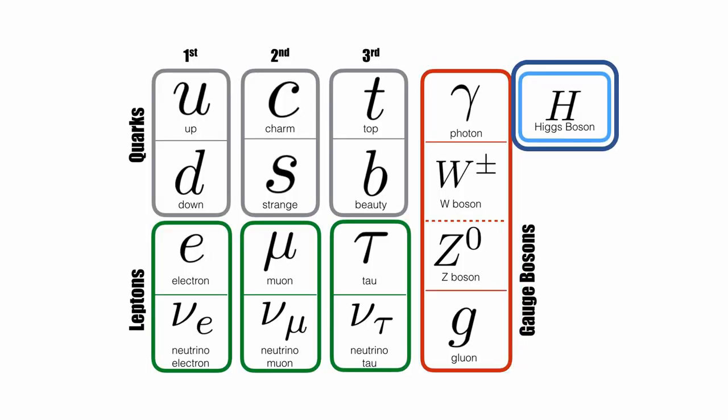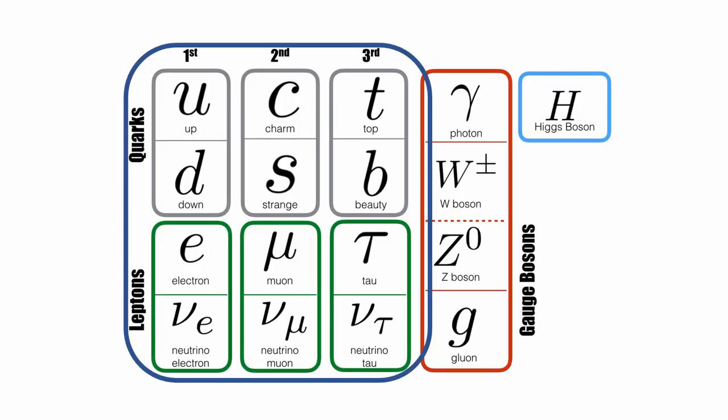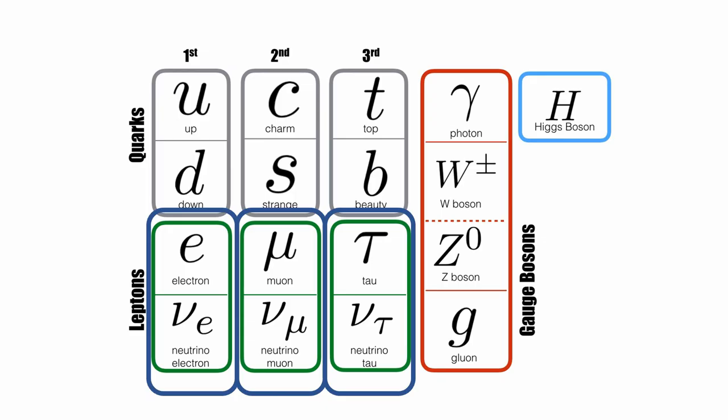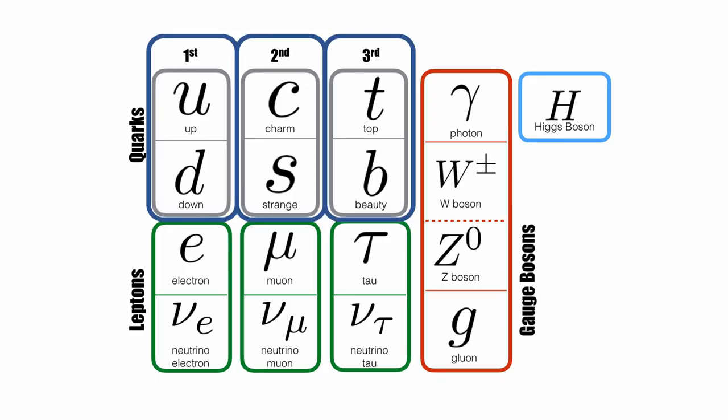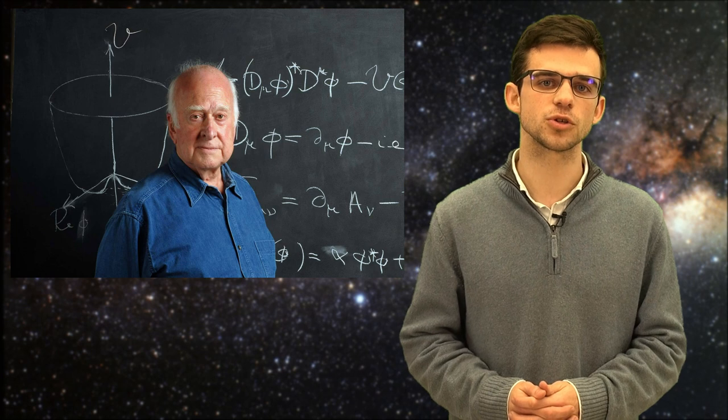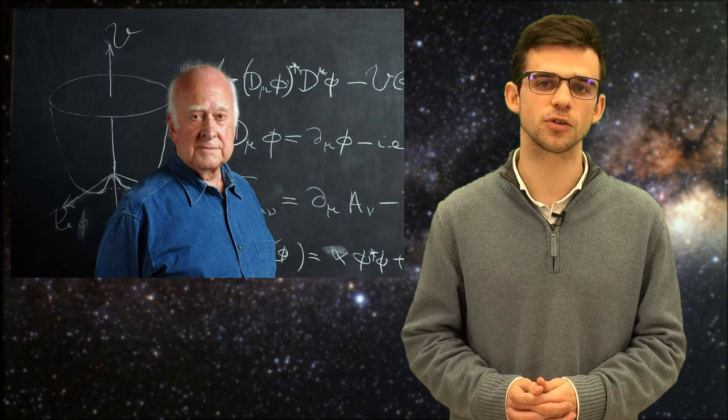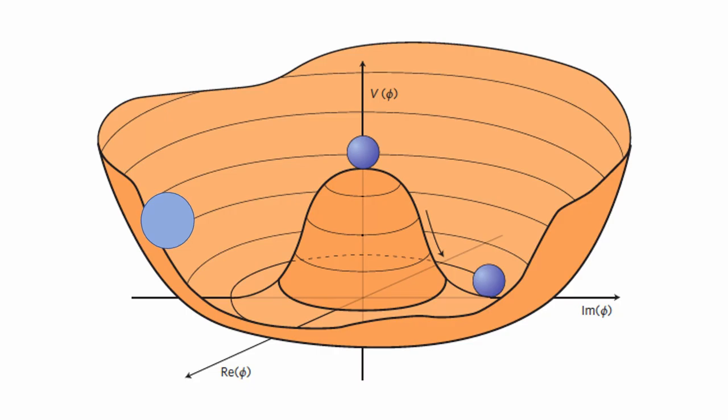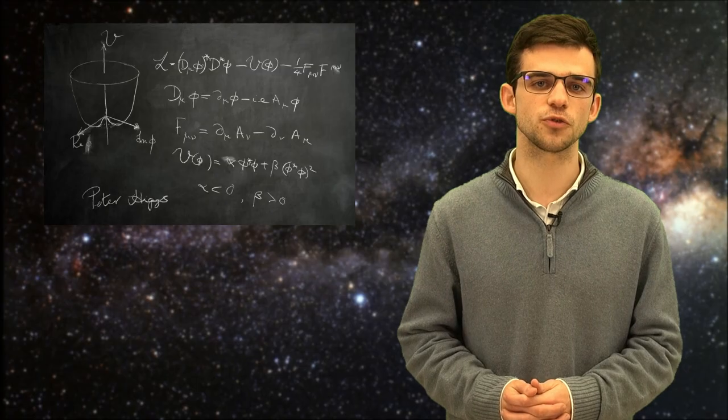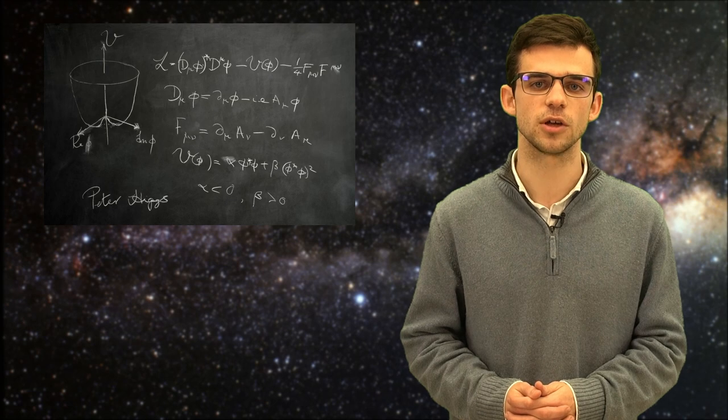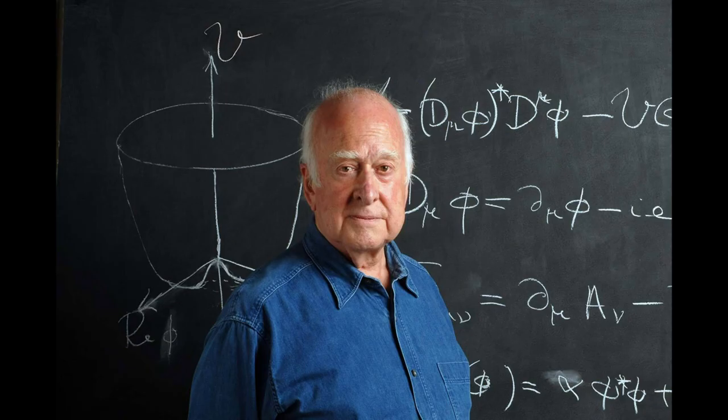The standard model contains the force carriers, a single Higgs boson, and matter particles, which are organized into one of three families of leptons or into one of three families of quarks. The Higgs boson has a crucial role in the masses of the particles since it is through the Higgs vacuum expectation value, the value around which the Higgs oscillates, that all the fundamental particles gain their masses. This is the so-called Higgs mechanism.